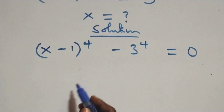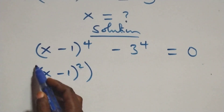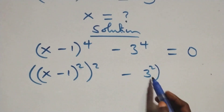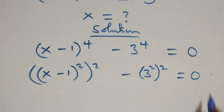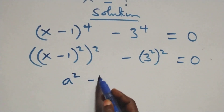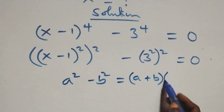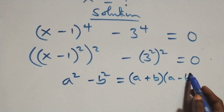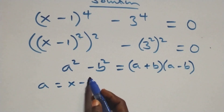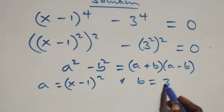We can write this as (x minus 1) raised to the power 2, then raised to the power 2, minus 3 raised to the power 2, raised to the power 2, equals 0. This follows the difference of squares: a squared minus b squared equals (a plus b)(a minus b), where a is (x minus 1) raised to the power 2 and b is 3 raised to the power 2.